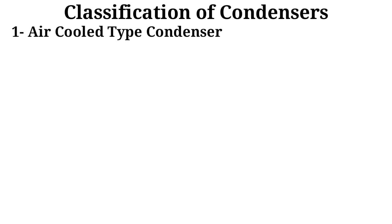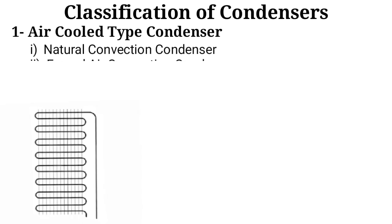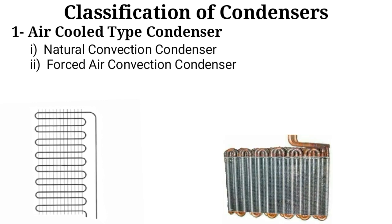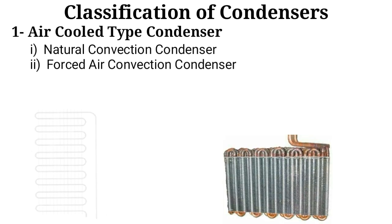The air-cooled type condenser may be classified further into two subcategories: number one, the natural convection condenser, and number two, the forced air convection condenser.